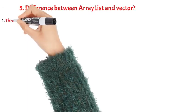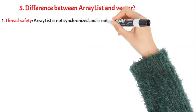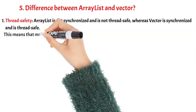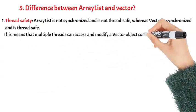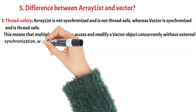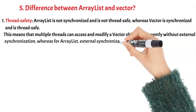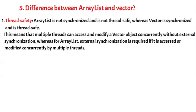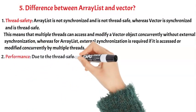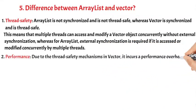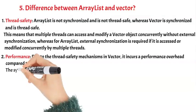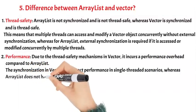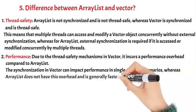Difference between ArrayList and Vector. Difference 1: Thread Safety — ArrayList is not synchronized and is not thread-safe, whereas Vector is synchronized and is thread-safe. This means that multiple threads can access and modify a Vector object concurrently without external synchronization, whereas for ArrayList, external synchronization is required if it is accessed or modified concurrently by multiple threads. Difference 2: Performance — Due to the thread-safety mechanisms in Vector, it incurs a performance overhead compared to ArrayList. The synchronization in Vector can impact performance in single-threaded scenarios, whereas ArrayList does not have this overhead and is generally faster in such cases.